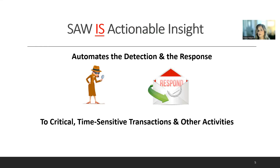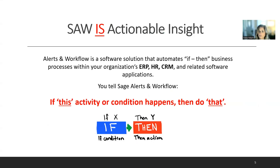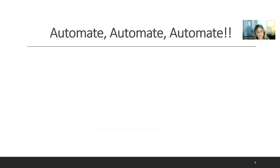Sage Alerts and Workflow is actionable insight. It automates the detection and response to critical, time-sensitive transactions and other activities, then responds with real-time alerts and intelligent workflow. The program is a software solution that automates the if-then business process within your organization's ERP, HR, CRM, and related software applications. Don't wait to react — let the software monitor at the speed of the data. Sage Alerts and Workflow is the king of automation.